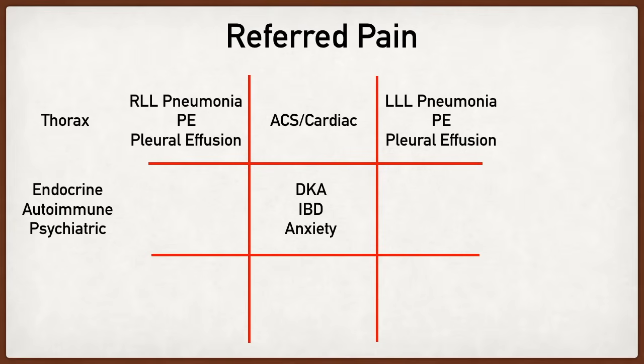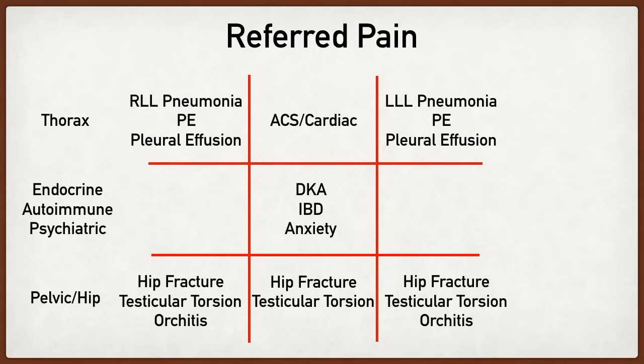Referred pain to the lower abdomen is usually caused by pelvic or hip etiologies, including hip fractures, osteoarthritis of the hip, or musculoskeletal injuries. Just as ovarian pathology can lead to lower abdominal pain in females, testicular pathology can lead to referred pain to the lower abdomen in males — including testicular torsion, orchitis, or epididymitis. The point is to consider not only abdominal etiologies but also things outside the abdomen that can lead to referred abdominal pain.